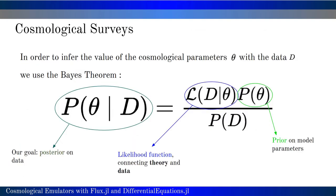In particular, in order to obtain the posterior on cosmological parameters, we use Bayes theorem and we need to compute a likelihood function. This computation can be quite time consuming, requiring between 1 and 10 seconds.